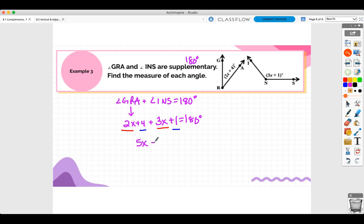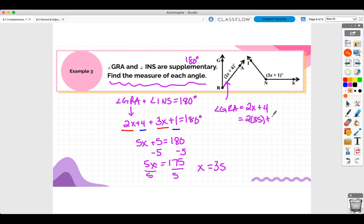Combine your like terms. So 2X plus 3X is 5X. 4 plus 1 is 5 is equal to 180. Subtract 5. You're going to get 5X is equal to 175. Divide by 5. So X is going to equal 175 divided by 5. And this is where a lot of you would end it. This is not the end of the problem. The question is asking, find the measure of each angle. So this angle over here, angle GRA is 2X plus 4. And we know that X is 35 now.